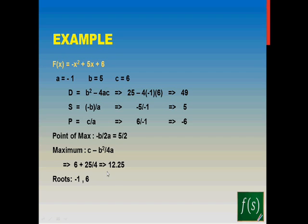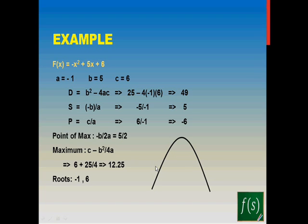Let's take an example: −x² + 5x + 6. Here a = −1, b = 5, c = 6. The discriminant is b² − 4ac = 49. The sum of roots is 5 and the product is −6. Since a is negative, the graph will be upside down. Since D is positive, the graph will cut the x-axis at two places. Which placement will be decided by the sum and product — but where will the y-axis lie relative to the roots?